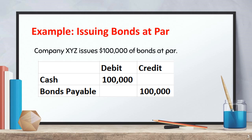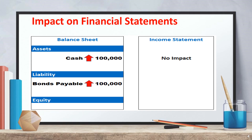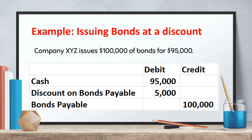We'll start with the simplest scenario: issuing bonds at par, meaning at their face value. Example: Company XYZ issues $100,000 of bonds at par. Journal entry: debit cash $100,000, credit bonds payable $100,000. When we issue bonds at par, we receive cash which increases our assets, and bonds payable increases our liabilities. Balance sheet impact: cash increases by $100,000, bonds payable increases by $100,000. On the income statement, there is no immediate effect.